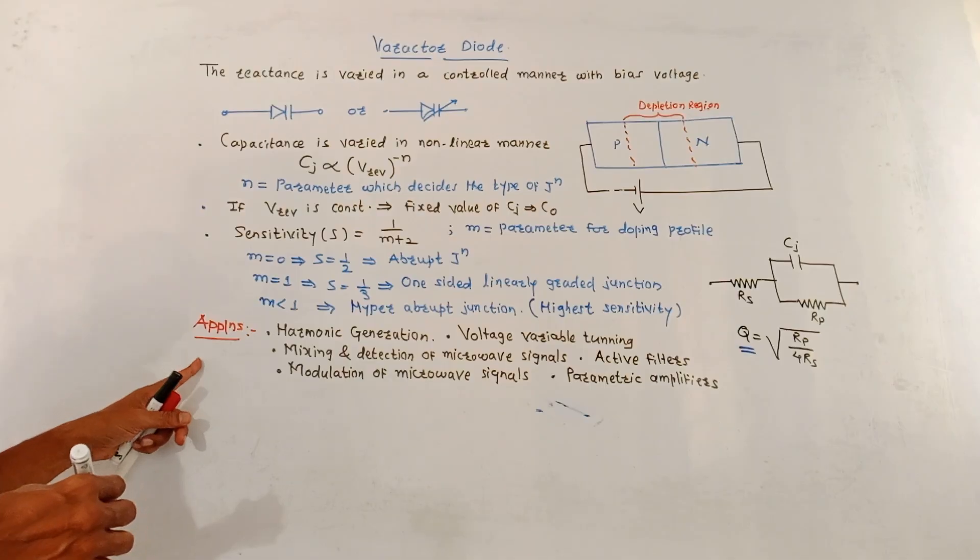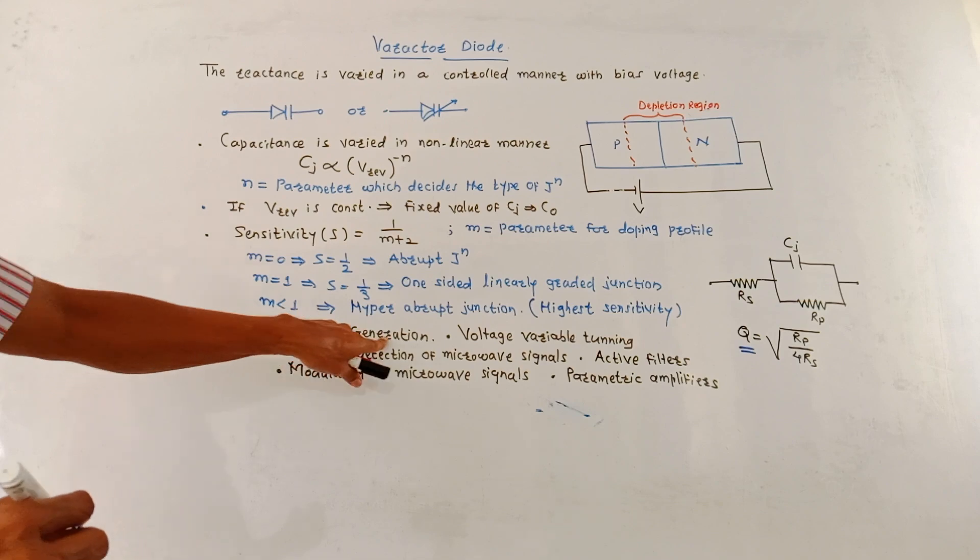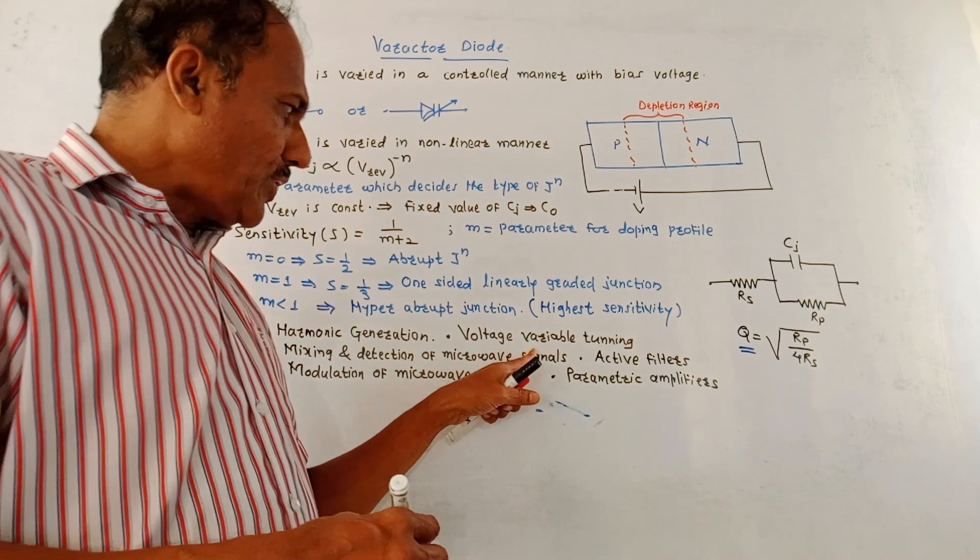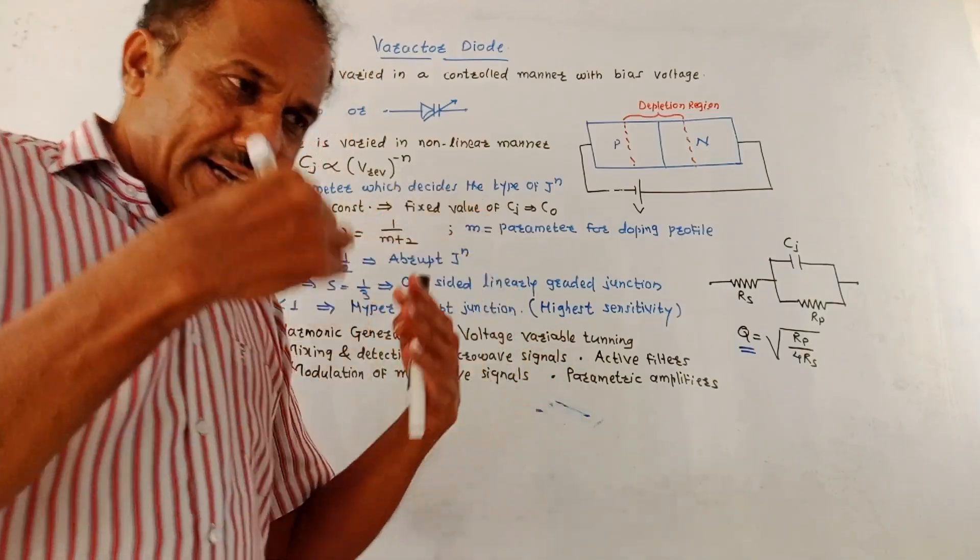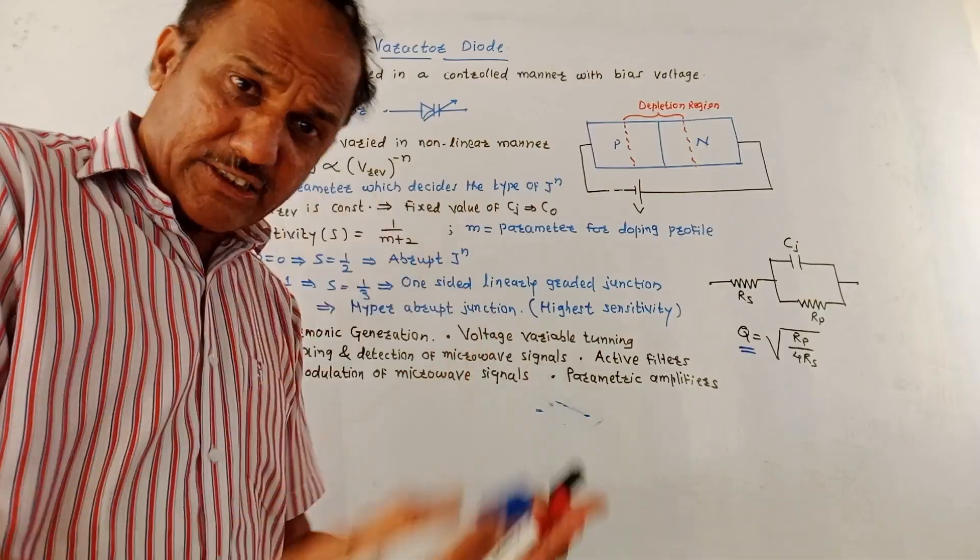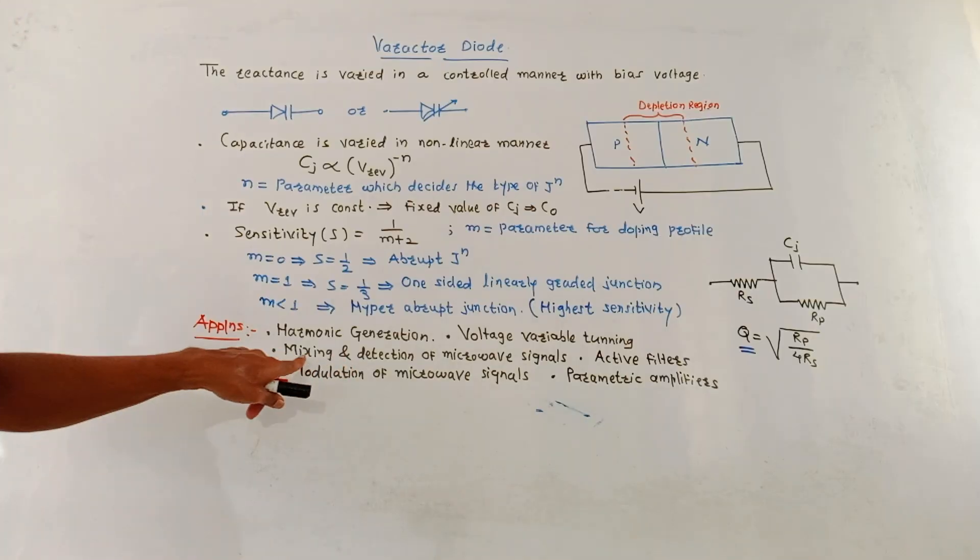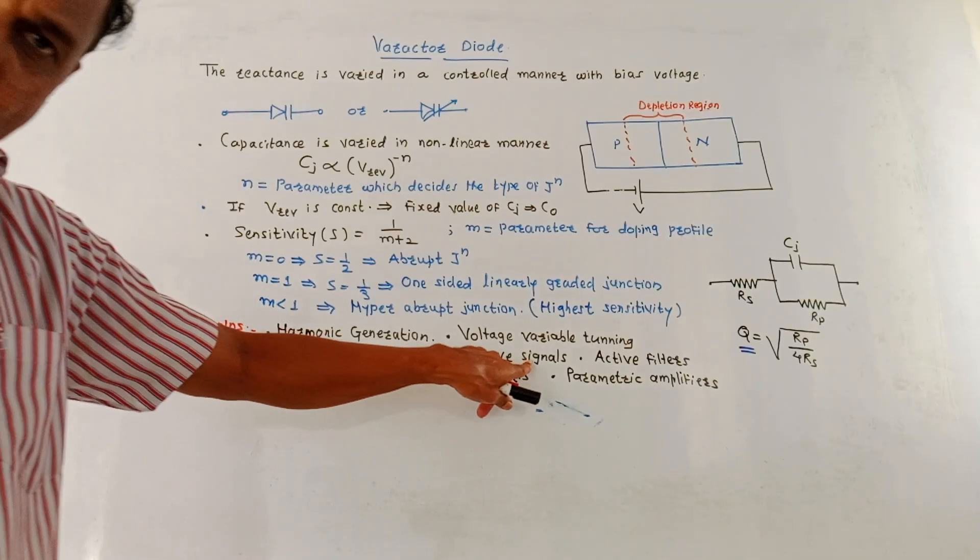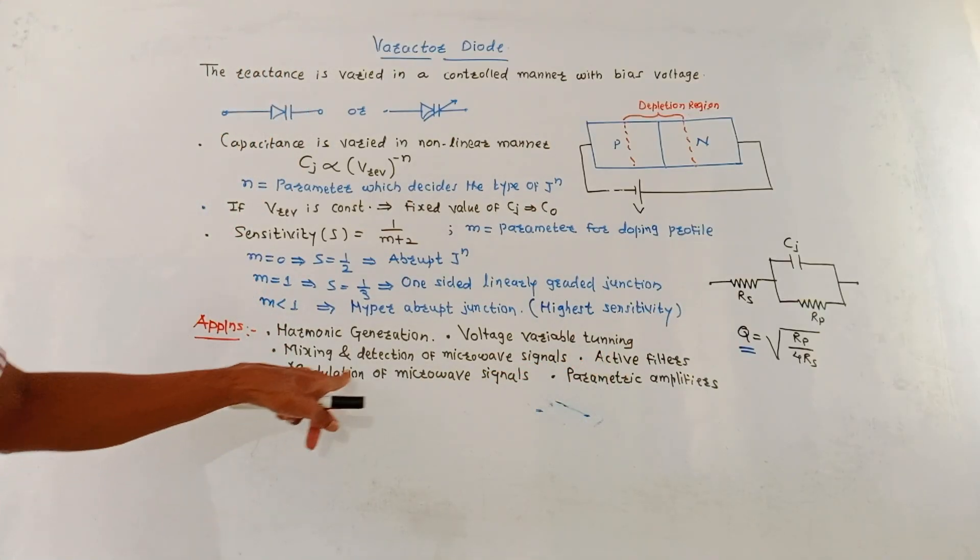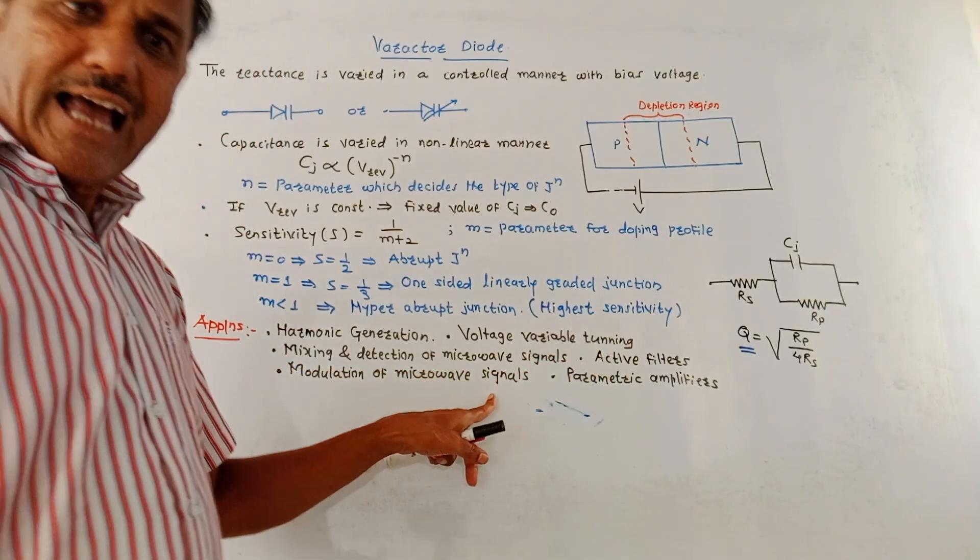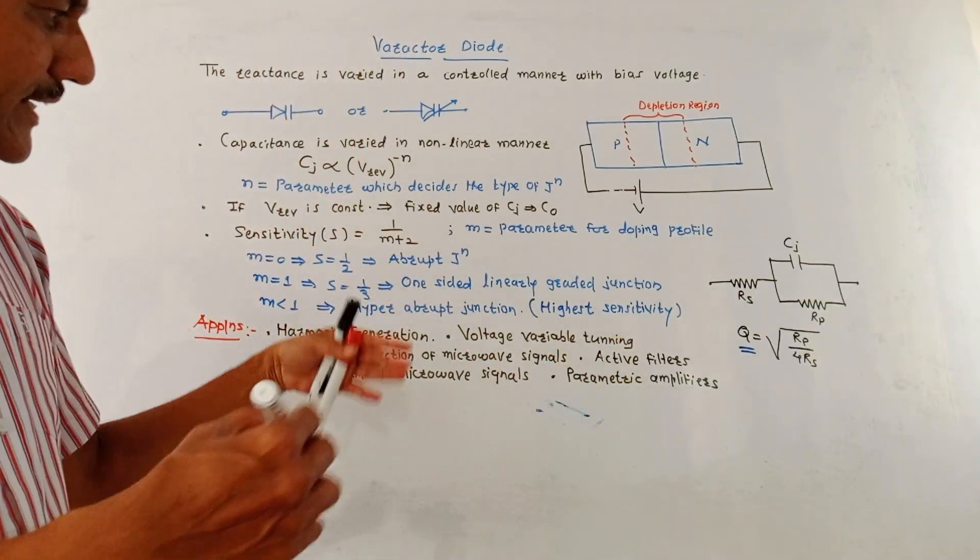Now, about the applications. There are many applications as far as this varactor diode is used. First is it is used for harmonic generation, second voltage variable tuning. In case of tuning, when you want to adjust a particular frequency, then variation in the capacitance is required. So, it can be used as a voltage variable tuning device. Then mixing and detection of micro signals, then it is used in active filters, then it is used in modulation of micro signals. And it can be also used in a parametric amplifier that we are going to study in detail.